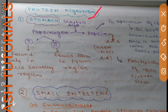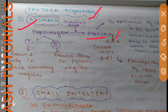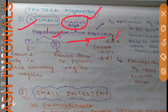Protein digestion usually begins in the stomach, where pepsin cleaves some of the peptide linkages. Like many other enzymes involved in protein digestion, pepsins are also secreted in an inactive form known as pepsinogen, which is converted into its active form, pepsin, by gastric acid, mainly HCl. Human gastric mucosa contains a number of related pepsinogens divided into two distinct groups: pepsinogen 1 and pepsinogen 2.